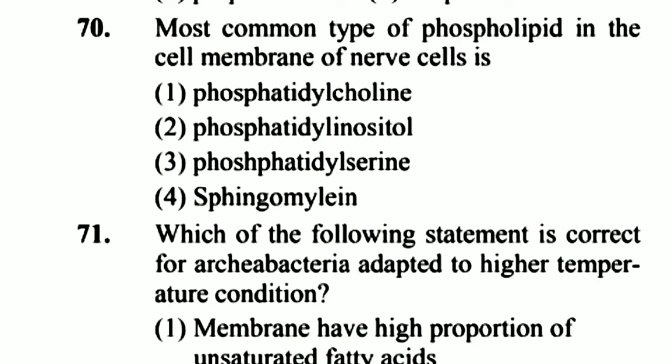Question 70: The most common type of phospholipid in the cell membrane of a nerve cell is sphingomyelin. Option 4 is right.